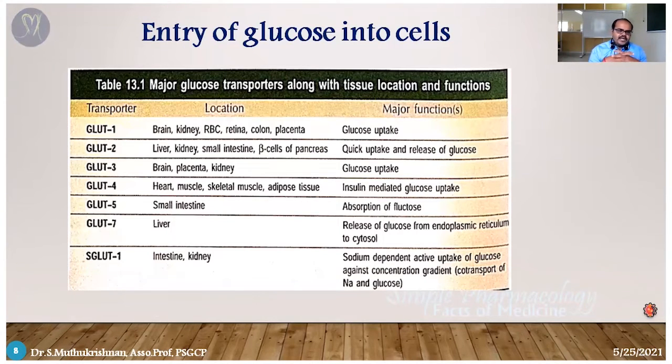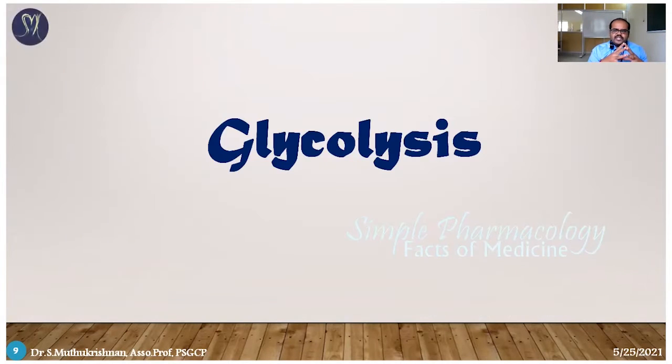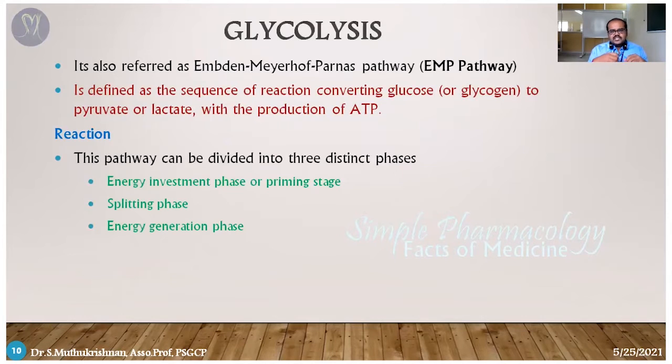There are seven major GLUT transporter types. GLUT2 is mostly present on the pancreas — when glucose is transported from extracellular to intracellular in beta cells, the beta cell releases insulin. GLUT 1, 3, 4, 5, and 6 are present in various other places, responsible for transporting glucose from extracellular to intracellular.